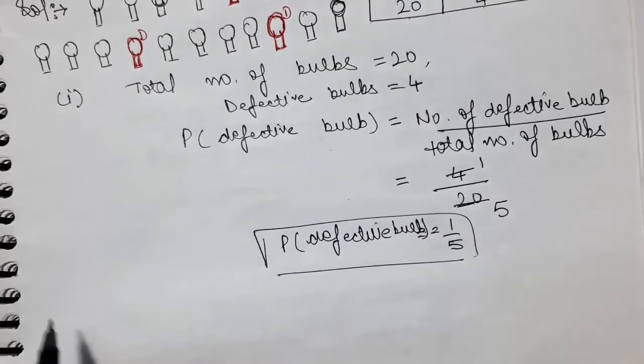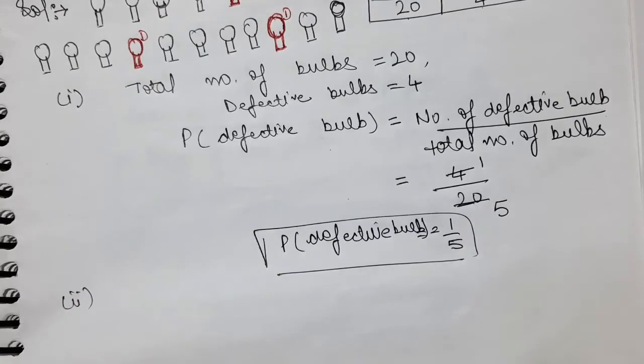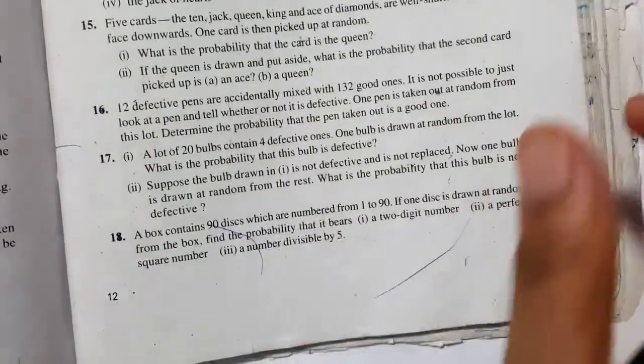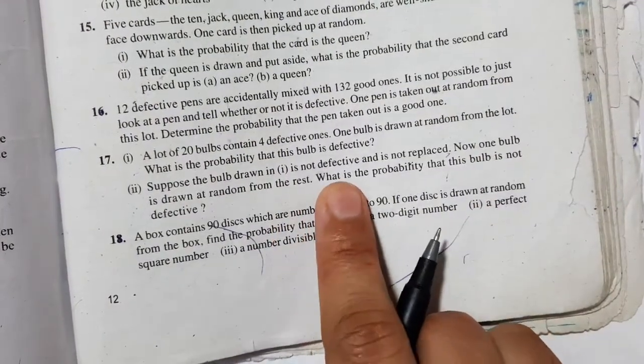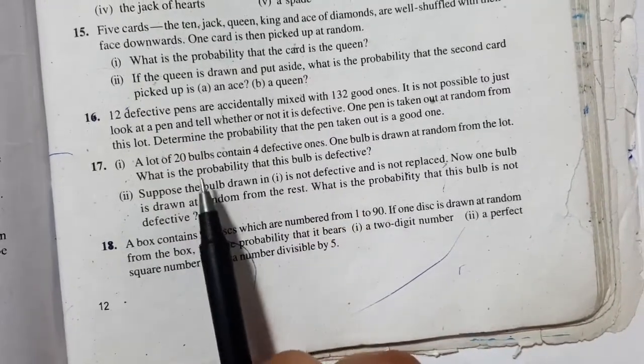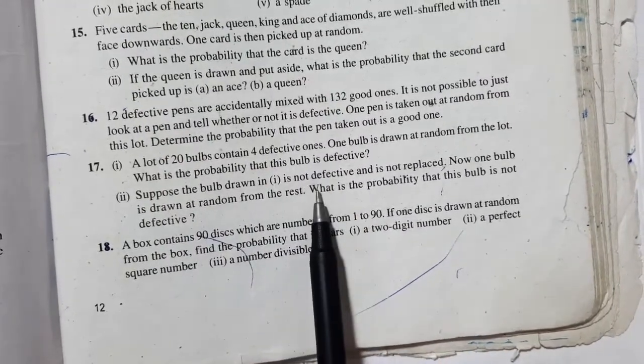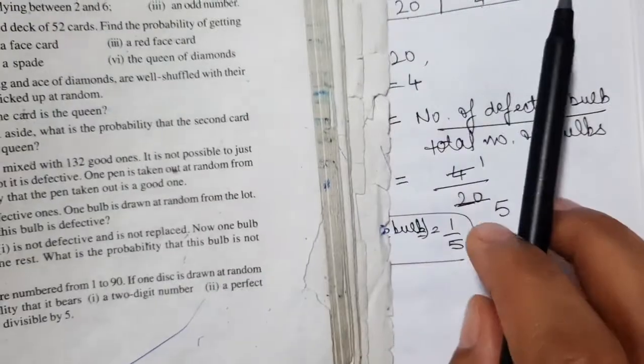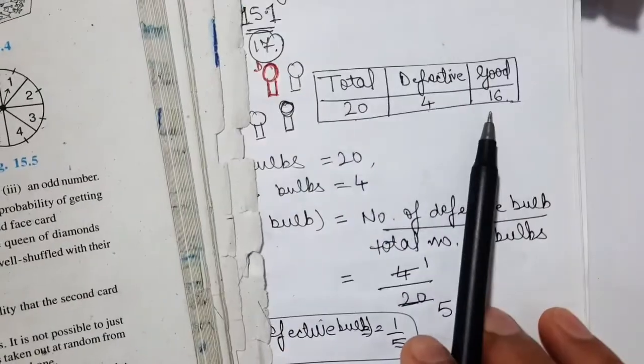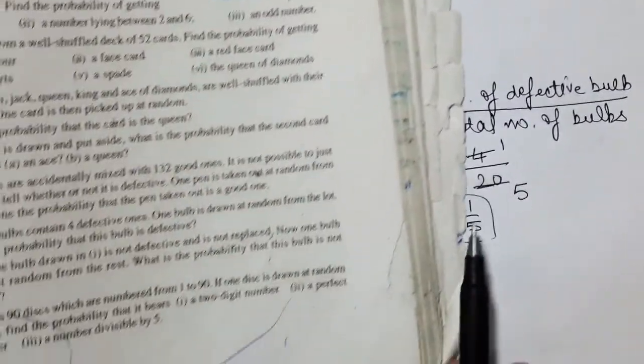Now, let's do our second part. What is the second part? Suppose the bulb drawn in one is not defective. It means good. These are the 16 bulbs in the first part. It will be selected in the first part. And is not replaced.